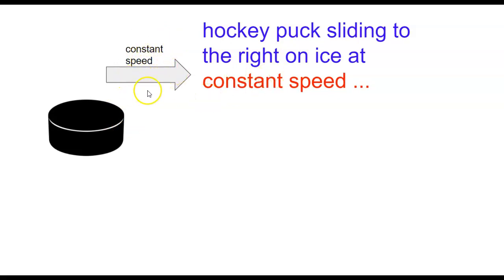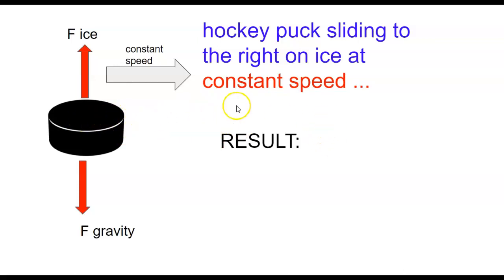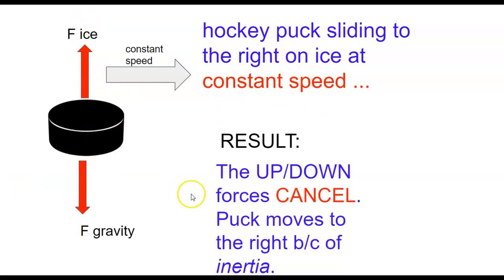We can't necessarily see these forces, but we can see right here the result of the forces — the puck sliding to the right at constant speed. So what do the forces look like? We have the force of gravity down, we have the force of the ice up, and believe it or not, that's it. Most people would insist, or believe at least initially, that there must be a force to the right. This is not the case. The up-down forces cancel and the puck moves to the right because of inertia. Inertia is not a force — it's a behavior.